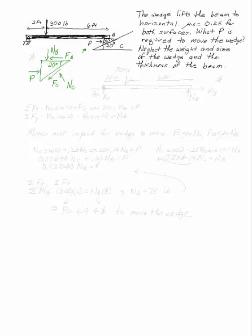That's the free body diagram of my wedge by itself. So if I take the sum of the forces in the x direction, I've got NC sine 20 plus FC cosine 20 plus FB equals P. And for the sum of the forces in the y direction, I have NC cosine 20 minus FC sine 20 equals NB.